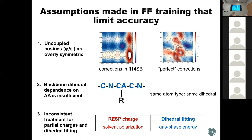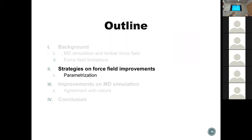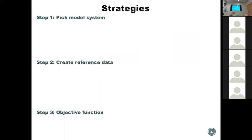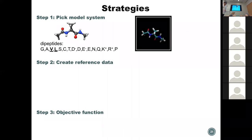Those are the three main things we think are very important. The force field parameterization has basically three steps: first, pick a model system; then create reference data; then come up with an objective function to gather parameters. For the model system, we use dipeptides — a bunch of different ones — and we scan the phi-psi dihedral space in full two-dimensional space. We save each structure and calculate energies using quantum mechanics in solution and MM in solution.